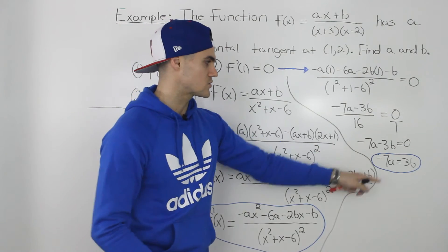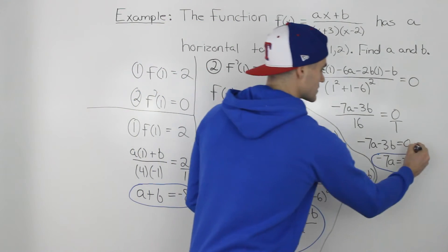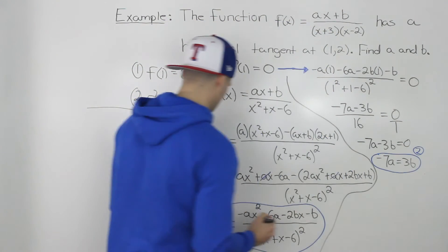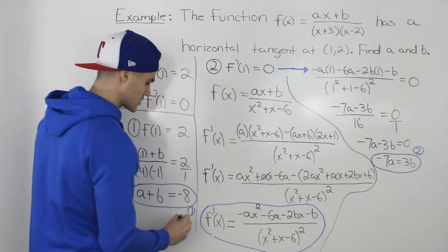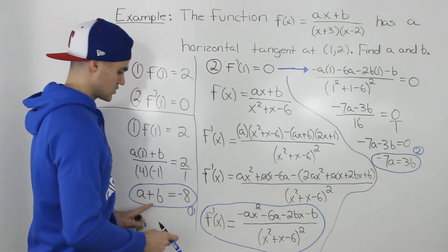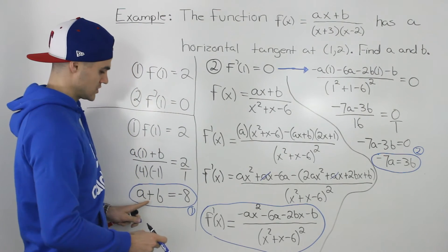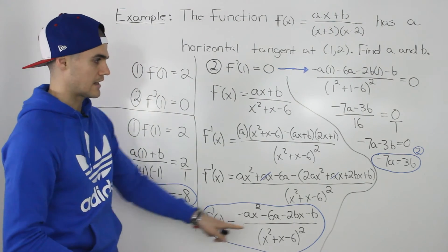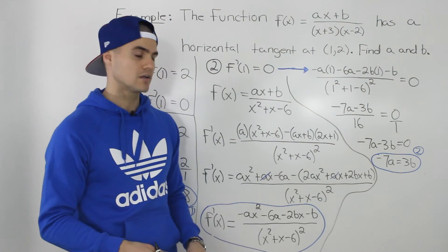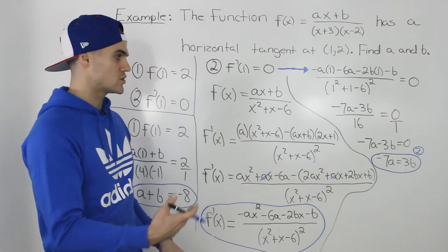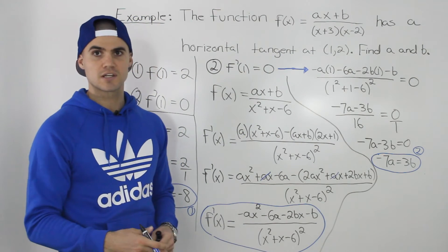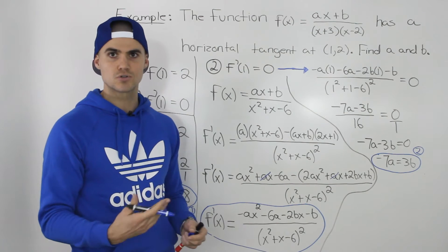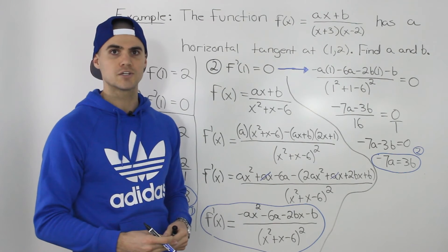So we now have two equations: a + b = -8 (equation one) and -7a = 3b (equation two) — two equations, two unknowns — and we can solve for a and b using substitution or elimination.